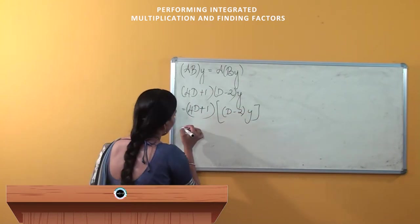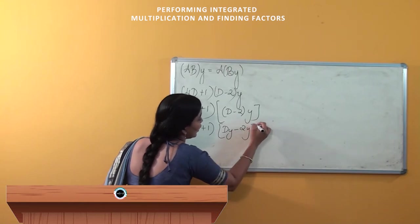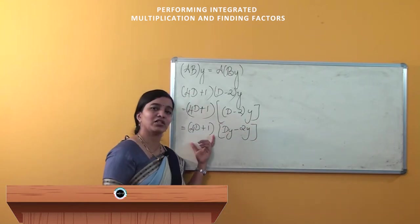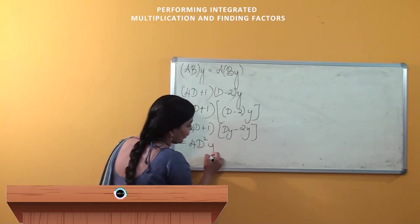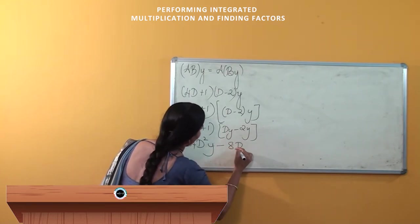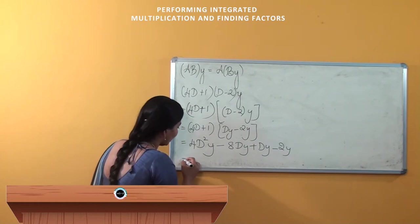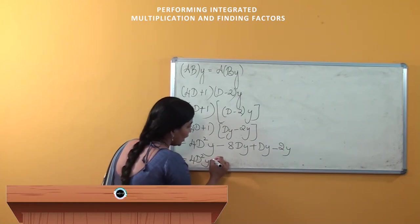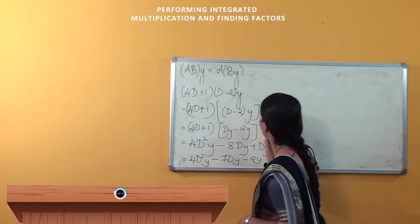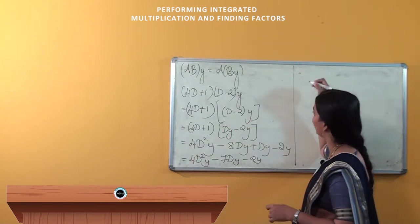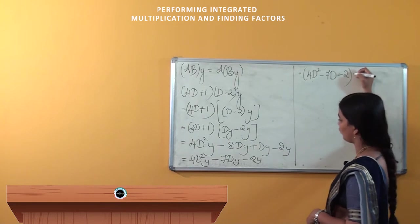When I perform the multiplication, I will get (4D + 1) into (Dy − 2y). Next, we perform multiplication between (4D + 1) and (Dy − 2y). When we further simplify, we will get 4D²y − 7Dy − 2y. Now I will take y common outside, giving 4D² − 7D − 2 into y.